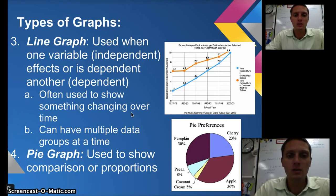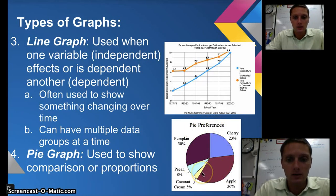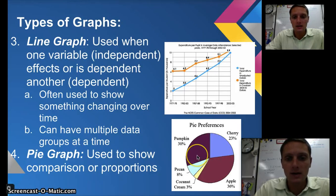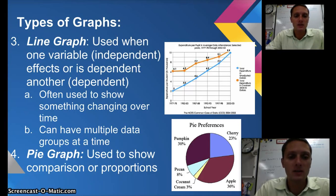A pie graph is used to show a comparison or proportions, and this is the one graph where we don't have x or y axis labels. In this example we're looking at pie preferences — cherry, apple, pumpkin, pecan, coconut cream, and others — comparing how many people prefer each type. Those are our four types of graphs. Next we'll look more specifically at how to make each of these in Google Spreadsheets.